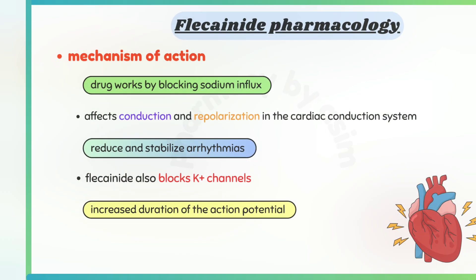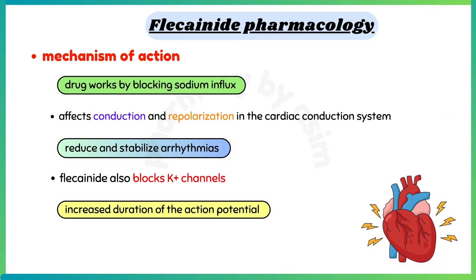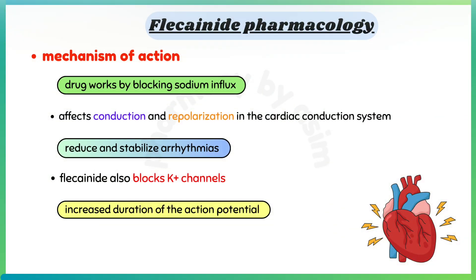Talking about the mechanism of action, this drug works by blocking sodium influx, which affects conduction and repolarization in the cardiac conduction system to reduce and stabilize arrhythmias. Flecainide also blocks potassium channels, leading to increased duration of the action potential.